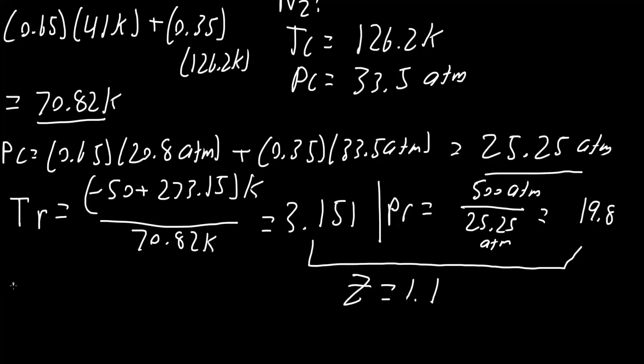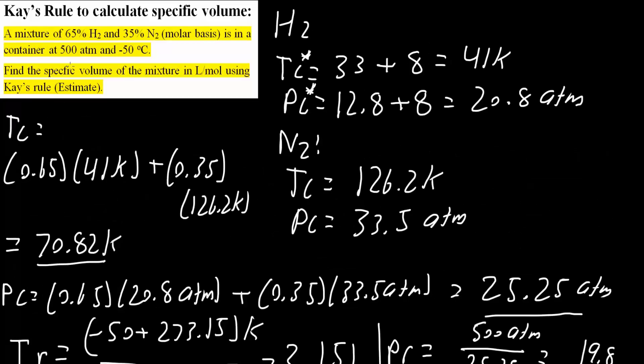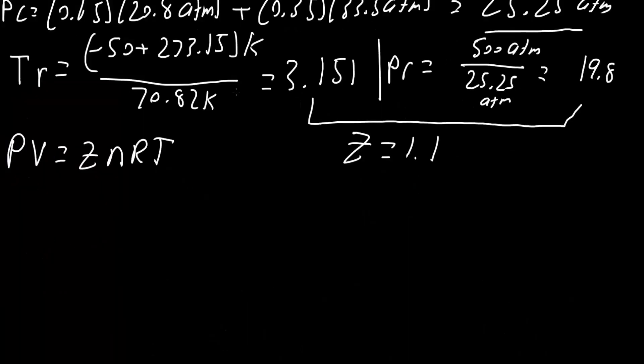From here, we use the formula PV is equal to ZnRT. Now, we want to calculate the specific volume, which is L over mole. That means that this formula right here is good, but to make it even easier, we can do this: PV over n equals ZRT. This symbol right here means volume over moles, essentially V over n. It's equivalent, and that is what we want to calculate.